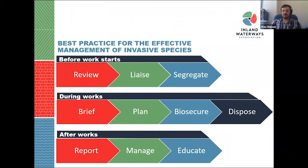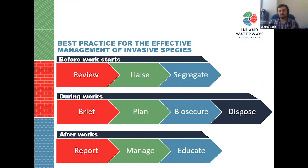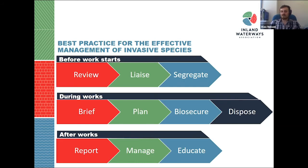During works, brief all those you'll be working with on what species are present, where to go, and where to avoid. Ensure planning permission is in place to control the species — volunteers may not have the correct qualifications to manage something like Japanese knotweed and can cause more of an issue. Biosecurity is also key: disinfect equipment, tools, boots, and PPE, and put up signs to warn volunteers and local people about what species are present.